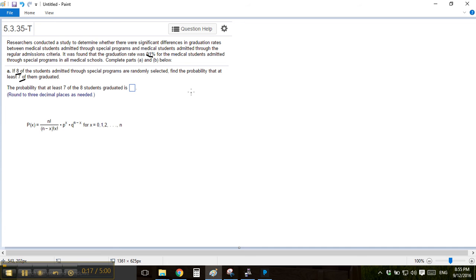Alright, so in other words, that means we need to find the probability of 7 graduating or the probability of 8 graduating. Because if either 7 of the 8 graduate or if 8 of the 8 graduate, then at least 7 will have graduated.